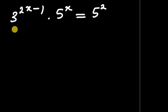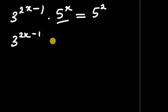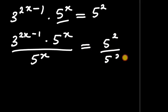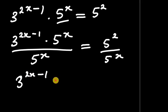Now we divide both sides by 5 to the power of x. The left side simplifies to 3 to the power of 2x minus 1, and the right side becomes 5 squared divided by 5^x, which by the same exponent rule gives 5 to the power of 2 minus x.